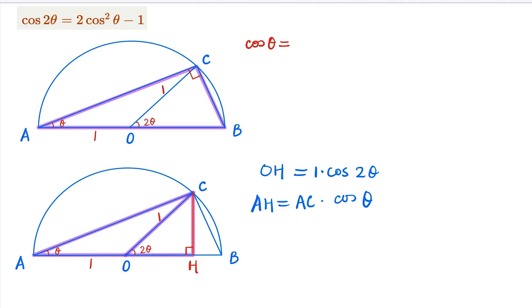So from this diagram here, cosine θ by definition is going to be AC over AB. Unit circle diameter is 2, so from here we know that AC is going to equal 2 cosine θ.